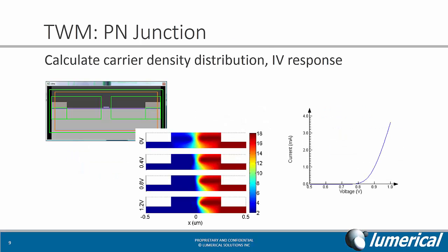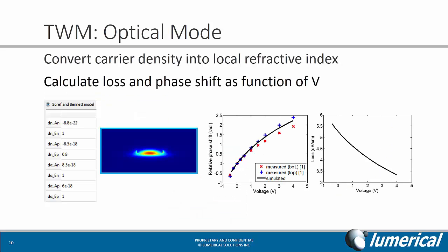Coming back to the PN junction for the traveling wave modulator, here we'll also want to calculate the carrier density distribution as a function of voltage, as well as the IV response. The carrier density can then be converted into changes in the optical refractive index, and modal analysis can be used to find the optical modes and extract the loss and phase shift as a function of voltage.